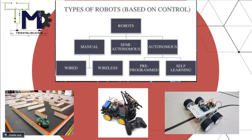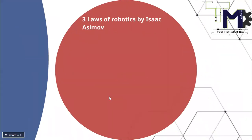The control system is a major part of the robot. Based on the controller, robots are classified as manual, semi-autonomous, autonomous, wired, wireless, pre-programmed, and self-programmed. An example of a pre-programmed robot is a line-following robot — we give it input so that when IR rays return to the receiver, it moves along the black line. A self-learning robot, like a maze-solving robot using an ultrasonic sensor, can learn from the environment and decide which direction to move.